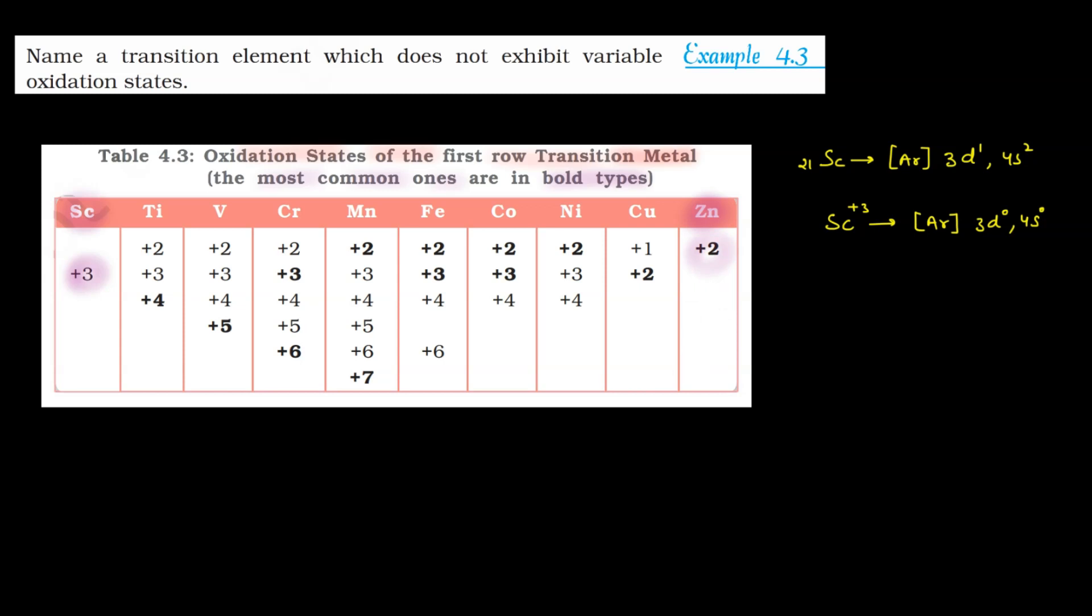Lekin beta, ye jo zinc hai, ye to transition element hi nahi hai, hai na? Zinc is a d-block element, but it is not a transition element. To question ko bahut dhyan se padhenge. Aapse poocha hai, name a transition element, to transition element kaun sa hua aapke paas - scandium, clear?